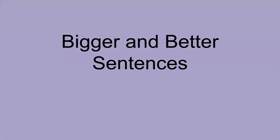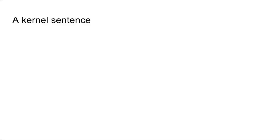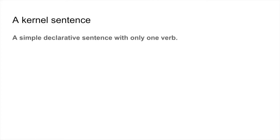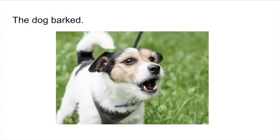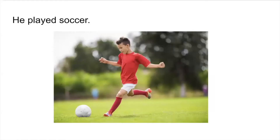Before we get into them, let's talk about a kernel sentence. A kernel sentence is a simple declarative sentence with only one verb. It is not to be confused with a sentence fragment, as it is a complete sentence. Here are a few examples of kernel sentences: Nicole laughed. The dog barked. He played soccer.